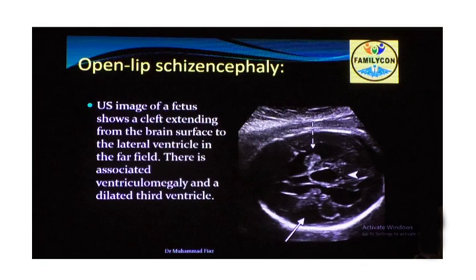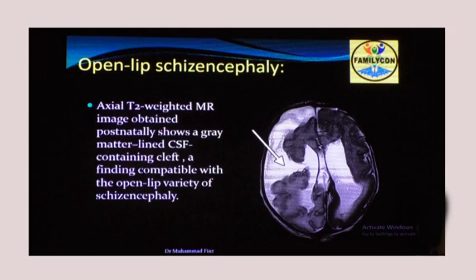For open-lip schizencephaly, an axial ultrasound image shows a CSF space at the lateral aspect extending to the calvarium cortex, along with ventriculomegaly. On MRI, this is more obvious — a large CSF space in the periphery in the right frontal region communicating with the ventricular system, confirming open-lip schizencephaly with associated ventriculomegaly.